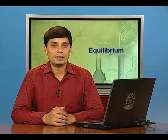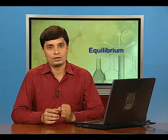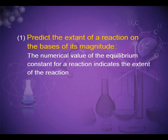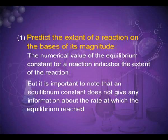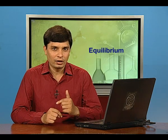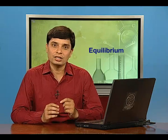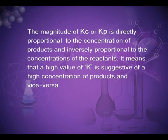Let us consider applications of equilibrium constant. First: to predict the extent of a reaction on the basis of its magnitude. The numerical value of the equilibrium constant for a reaction indicates the extent of the reaction, but it is important to note that an equilibrium constant does not give any information about the rate at which the equilibrium is reached. The magnitude of Kc or Kp is directly proportional to the concentration of products and inversely proportional to the concentration of the reactants.